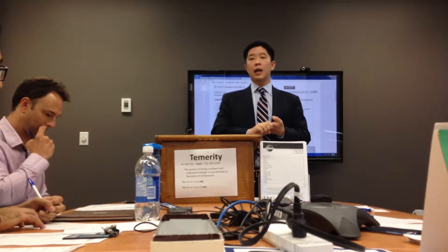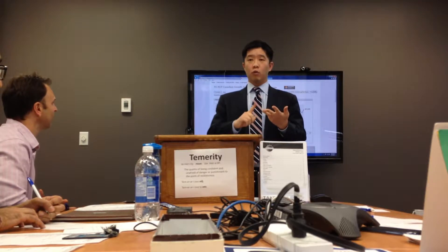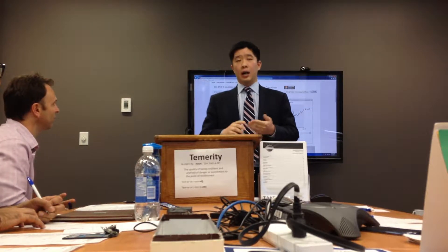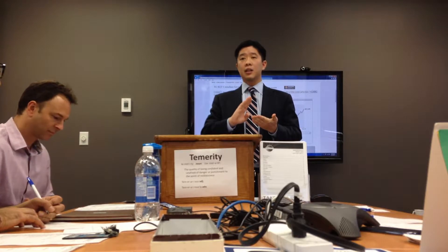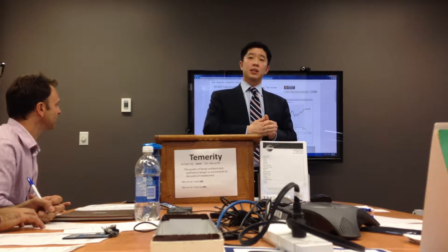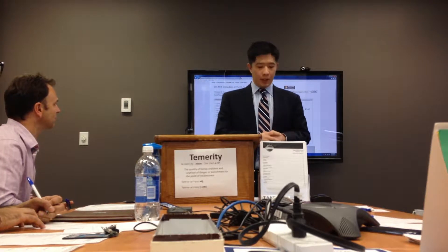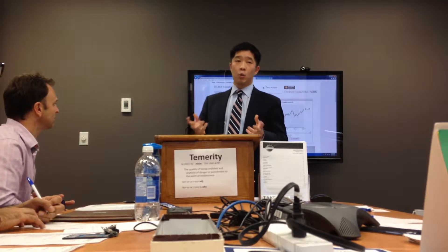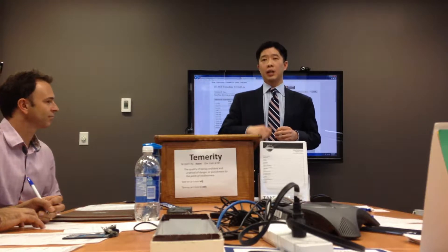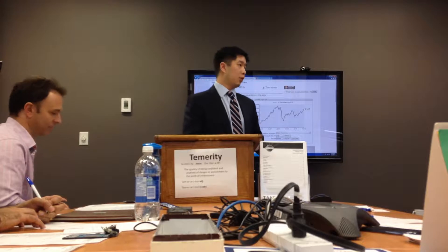Number two, you look at obviously the returns — what are the returns over one, three, five, ten years? Number three, you look at the beta, and beta is the market risk — how does it correspond to the markets? And last but not least, you look at the MER, or management expense ratio — what do you have to pay every year to hold this fund and how's the performance for you?